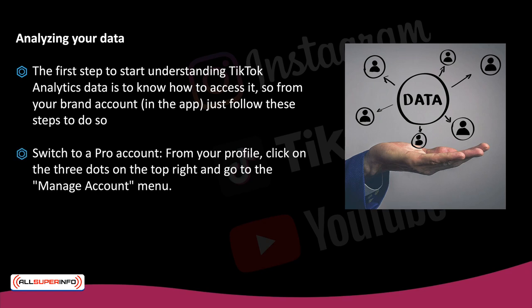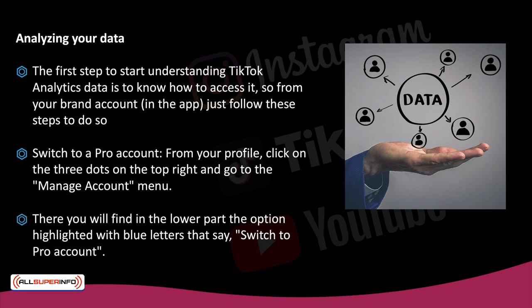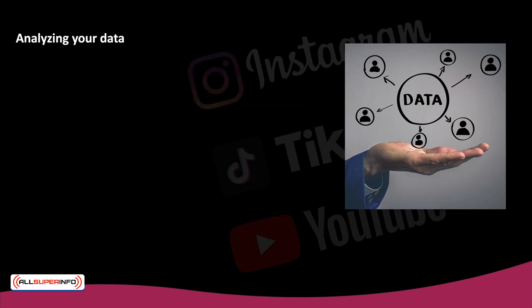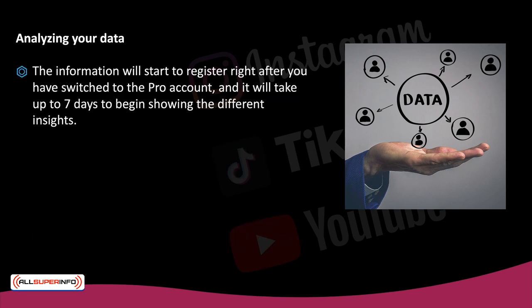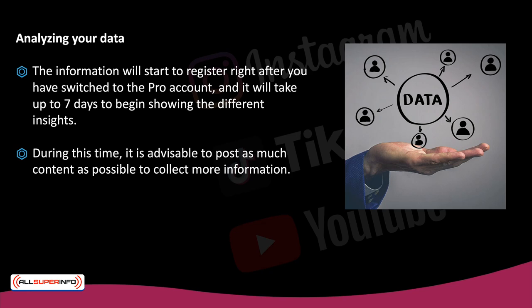Switch to a pro account: from your profile, click on the three dots on the top right and go to the manage account menu. There you will find in the lower part the option highlighted with blue letters that says 'switch to pro account.' The information will start to register right after you have switched to the pro account, and it will take up to seven days to begin showing the different insights. During this time, it is advisable to post as much content as possible to collect more information.